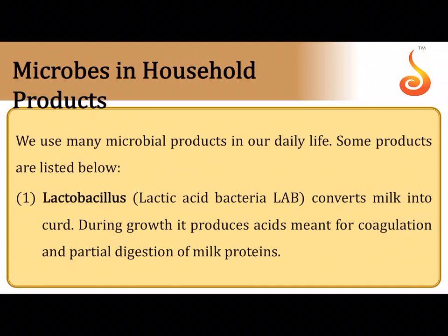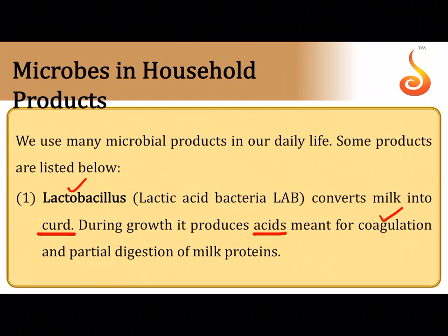How are microbes useful in household products? The first microbe that comes to mind is Lactobacillus, also called lactic acid bacteria. Lactobacillus is involved in the curdling of milk. This curdling happens because Lactobacillus produces lactic acid through anaerobic fermentation, and this lactic acid brings about coagulation of the milk protein casein.